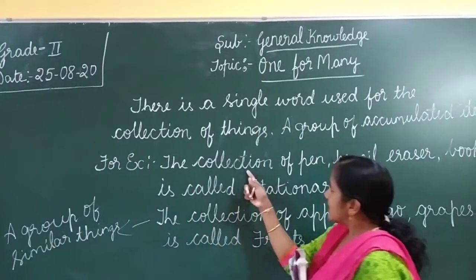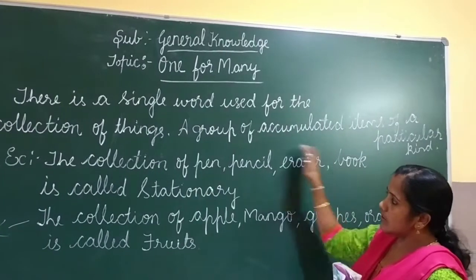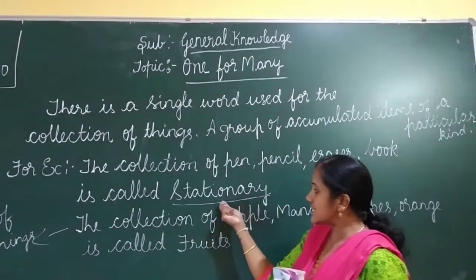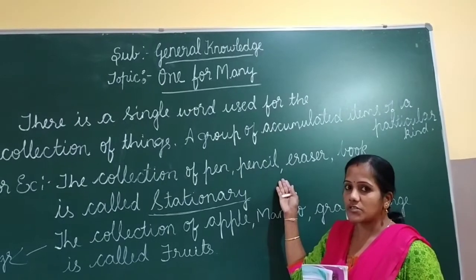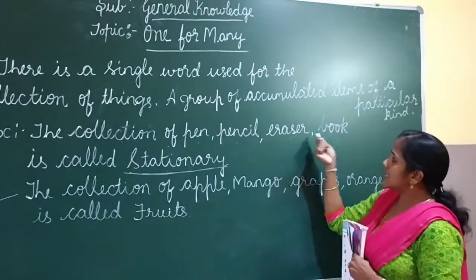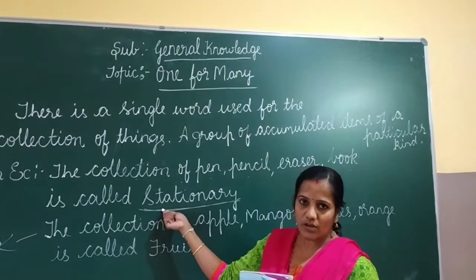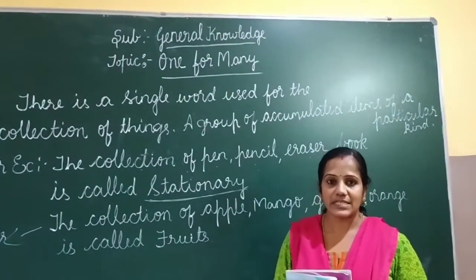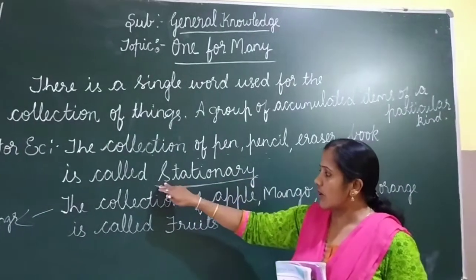For example, the collection of pen, pencil, eraser, book — we call it as a single word: stationery. We go to a stationery shop to buy a pen, pencil, book, colour pencils, etc. So it is a single word for the collection of a particular kind.